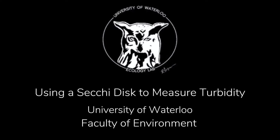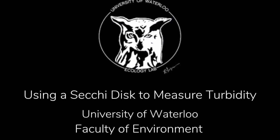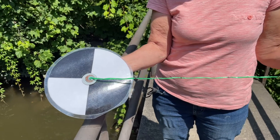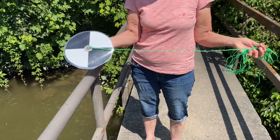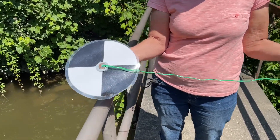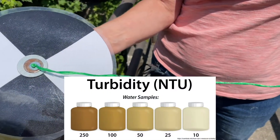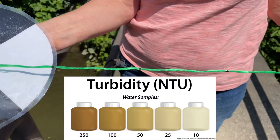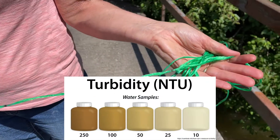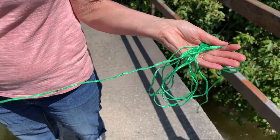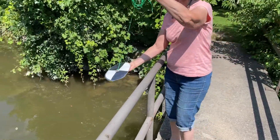Welcome! Today at the University of Waterloo, Faculty of Environment's Ecology Lab will demonstrate using a freshwater Secchi disk to assess water transparency, known as turbidity. This method does not provide an exact value of turbidity, but is a straightforward and inexpensive method of measuring water clarity.